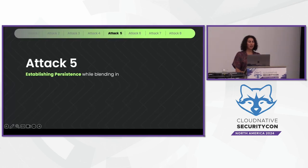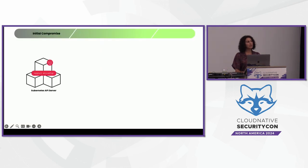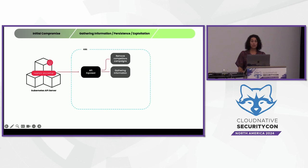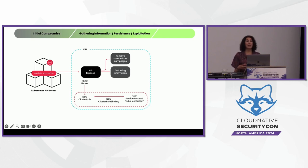The next attack focuses on how attackers can blend in really well while establishing persistence. An attacker gained access through a misconfigured Kubernetes API server that allowed unauthenticated requests from anonymous users. They sent HTTP requests to list secrets and API requests to gather information, then achieved persistence through RBAC. They created a new cluster role with admin privileges not bound to a specific namespace, created a service account named 'kube-controller' in the kube-system namespace, then created a cluster role binding — all named to blend in with API audit logs and look like a legitimate cluster binding.